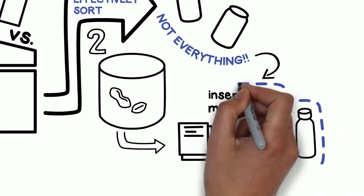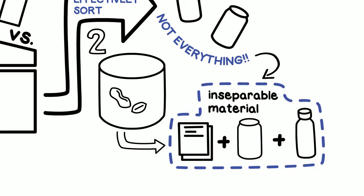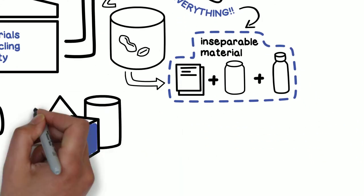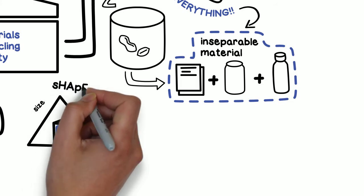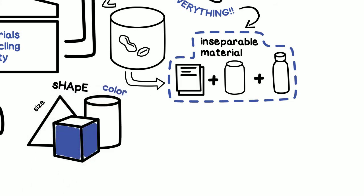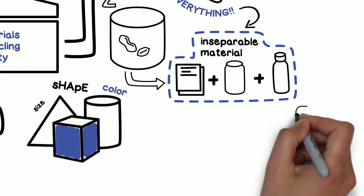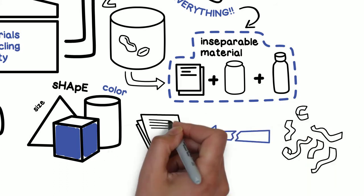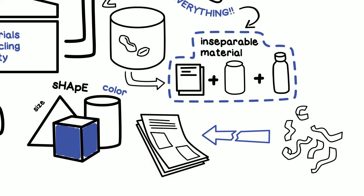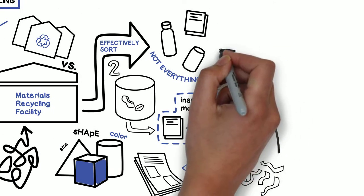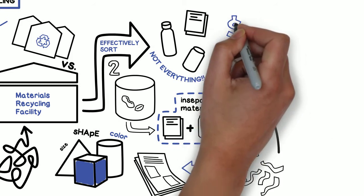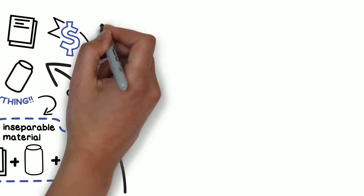Another example is when the item size, shape, and color prevents them from being sorted properly. Although shredded paper is paper, it cannot be successfully sorted into the paper stream because of its small size. Instead, shreds fall into other streams and become contaminants and lower other materials' value.